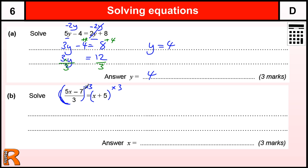If I times this side by 3, those 3's cancel to leave me with 5x minus 7. And this side, if I times by 3, I've got to times the x by 3 to get 3x and the 5 by 3 to get 15.